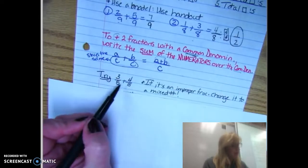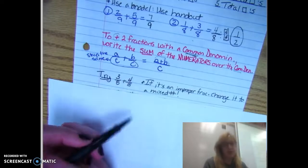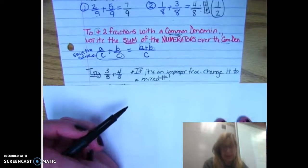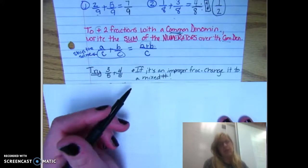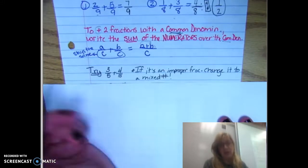So try three fifths plus four fifths. If you get an improper fraction, hint hint, would you please turn it into a mixed number? Would you pause the video and try it and then we'll go through it together.